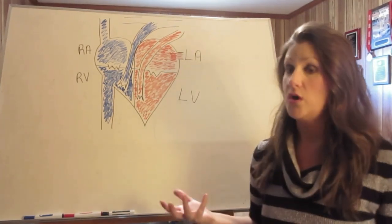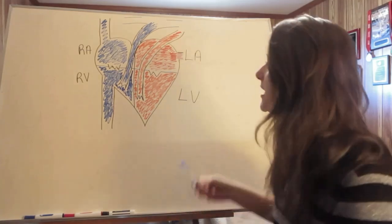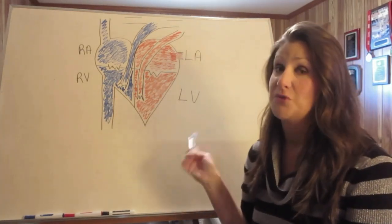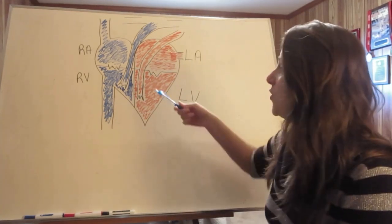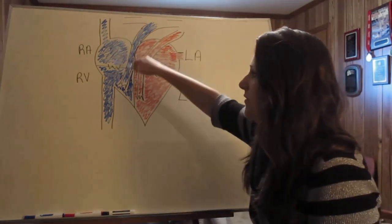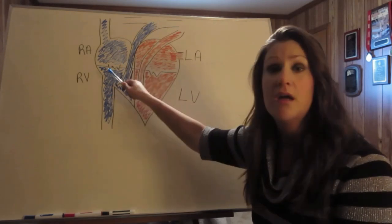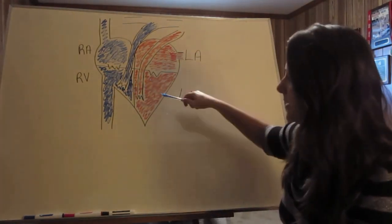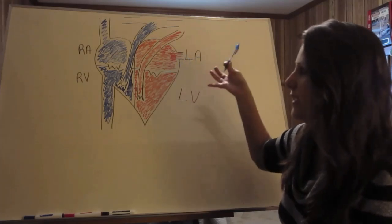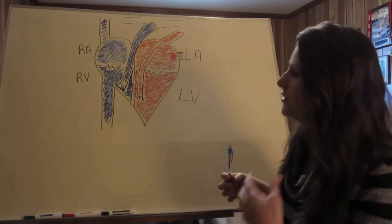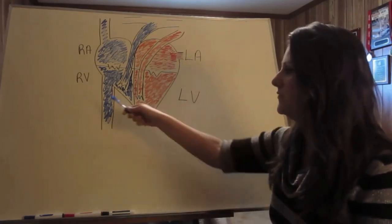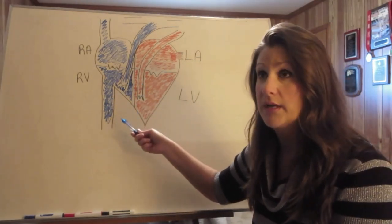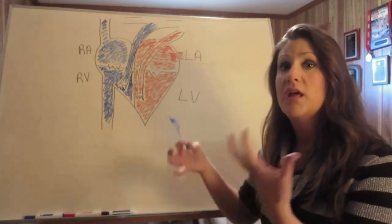Blood flow through the heart. Deoxygenated blood is on the right side of the heart, and oxygenated blood is on the left side. Deoxygenated blood comes back from the body.